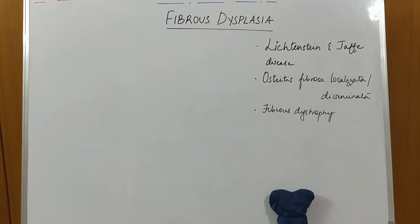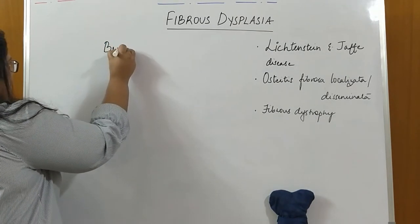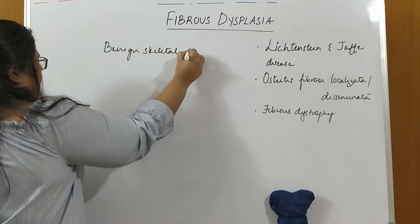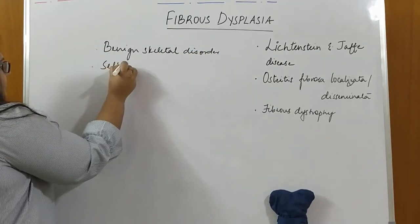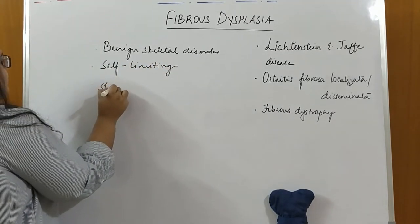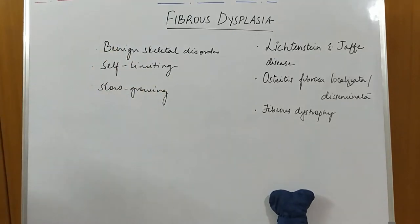So what is Fibrous Dysplasia? When someone says Fibrous Dysplasia, three words come to my mind: it's a benign skeletal disorder, it is self-limiting, and it is slow-growing. You can't forget these three features, and you can't miss them either clinically or in your exam.